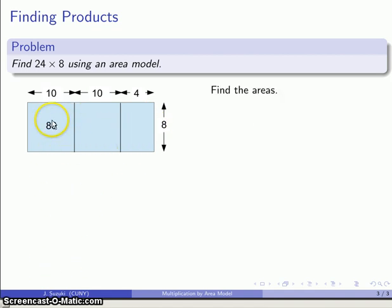So this first piece here has area 80. This is 10 by 8, also area 80. 4 by 8, area 32. And the sum is the area, so the sum is the product, so I'm going to add those areas together. The product is the sum, and 80 and 80 and 32 is 192, and there's my product.